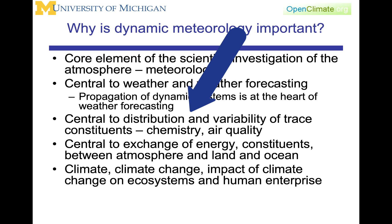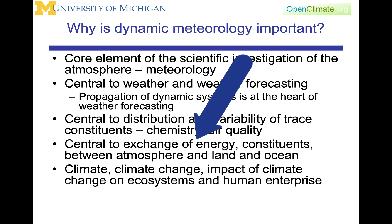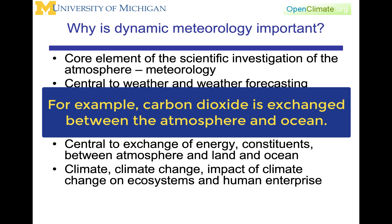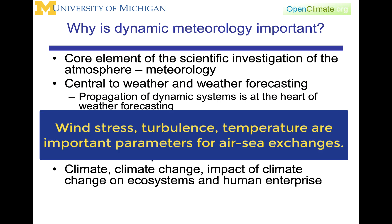Dynamic meteorology is central to the distribution and variability of trace constituents such as ozone and pollution from automobiles and air quality, so it's important to chemistry. It's also central to the exchange of energy constituents between the atmosphere, the land, and the ocean. Carbon dioxide is absorbed into and released from the ocean, and wind stress and turbulence at the surface is central to that exchange, as is temperature.